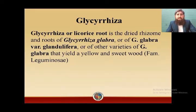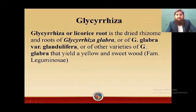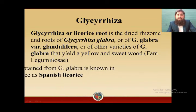Glycyrrhiza, also known as 'Mulethi' in the Urdu language, or licorice root, is the dried rhizome and roots of Glycyrrhiza glabra, or Glycyrrhiza glabra var. glandulifera, or other varieties of Glycyrrhiza glabra that yield a yellow and sweet root. It is also known as sweet root, and belongs to the family Leguminosae.